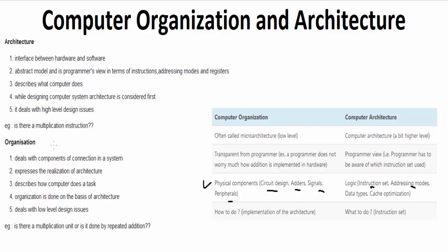Organization expresses the realization of architecture and describes how the computer does a particular work. In computer organization, whether an instruction will be implemented by a multiplying unit or by repeated use of an addition unit is decided.